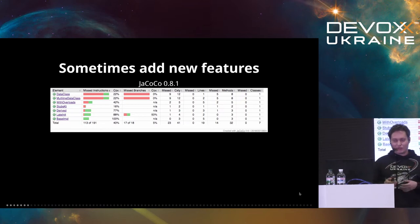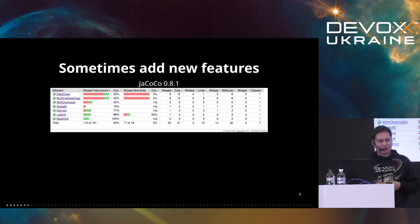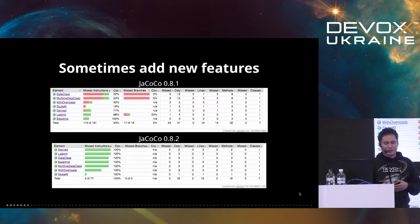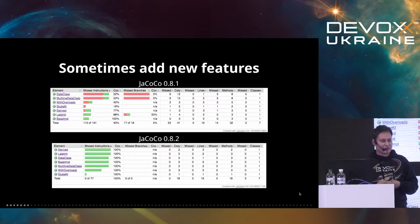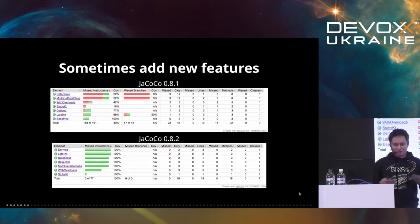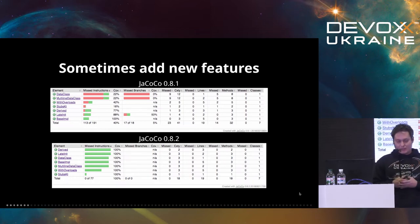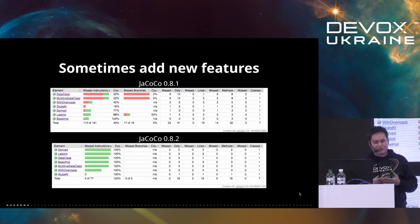Here is how the code coverage report was looking before we added some features — this is a code coverage report for some Kotlin classes. Not so nice. One might think from this report that tests were pretty bad. Actually, tests were pretty good, and the real picture looks much better once we added some filtering. The code coverage report now represents reality. The goal of this talk is to see why we need some filtering.